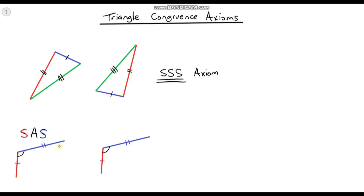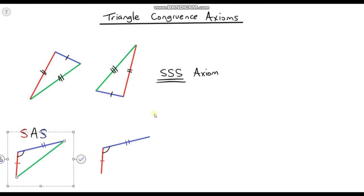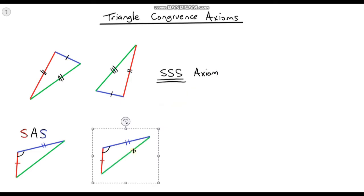Notice there's only one possible way of finishing the triangle. The side length I'm going to draw in green is going to be exactly the same for both triangles — and just to prove that, if I copy and paste it and pop it in, notice those are exactly the same. So we have two identical triangles — these two triangles are congruent. If two triangles have two side lengths the same and the angle in between them is the same, then we know for sure those two triangles are congruent. This is called the SAS axiom.